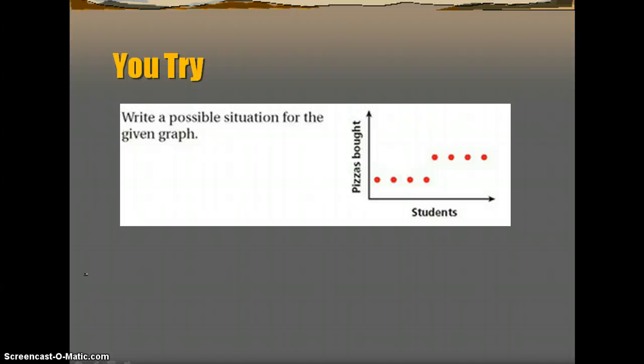So the You-try that you have says write a possible situation for the given graph. And we have students versus pizzas bought. As you can tell, this is discrete. So that should make sure that you are careful with your wording. And once you are done with this, write down any notes you have and we will go over them in class. And that is the end of the final video.